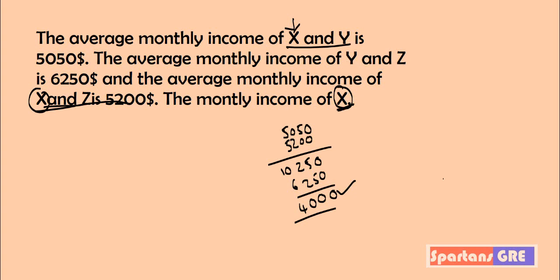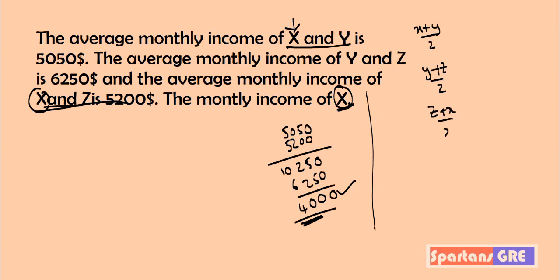Now let's see the derivation — how we arrived at this step directly. You know the value of (X + Y)/2 is given; this is the average of X and Y. The value (Y + Z)/2 is also given, and (Z + X)/2 is also given.